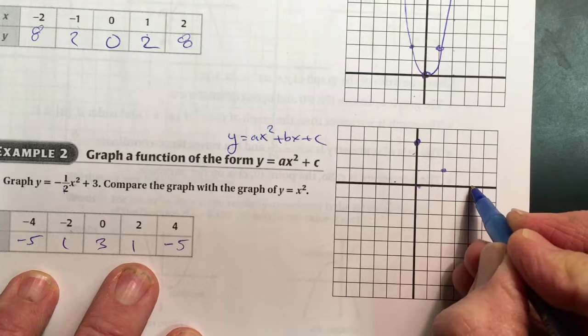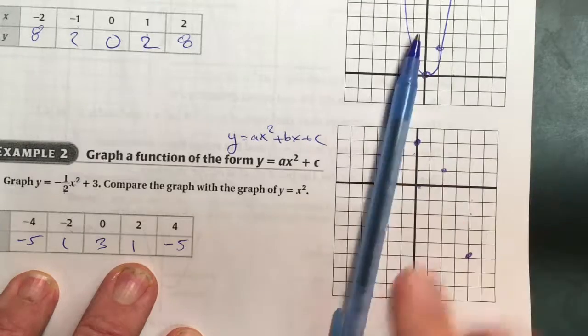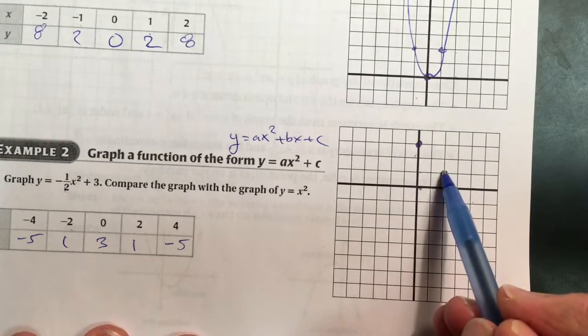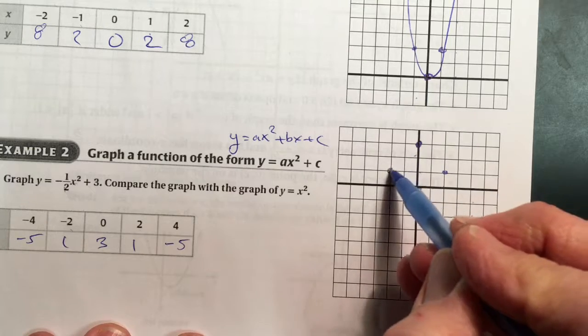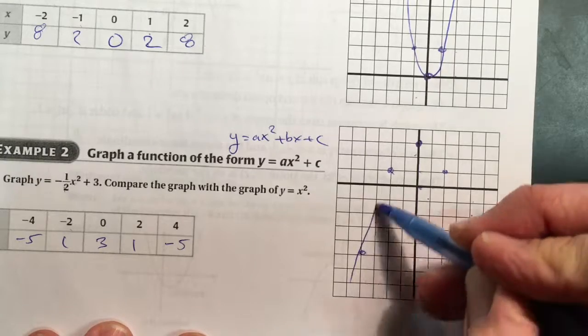Over 4 and down 5. And again, axis of symmetry is the y-axis. I can just mirror across. Down here and we can draw the graph.